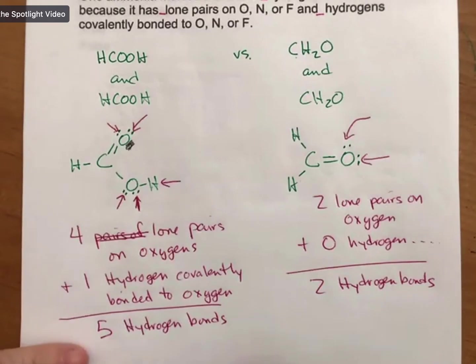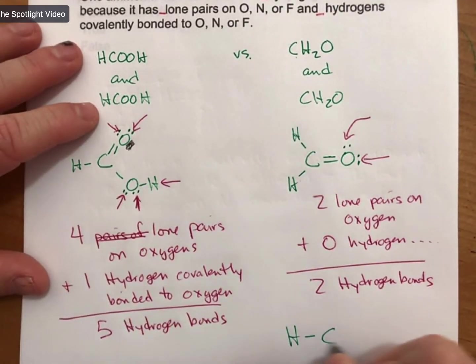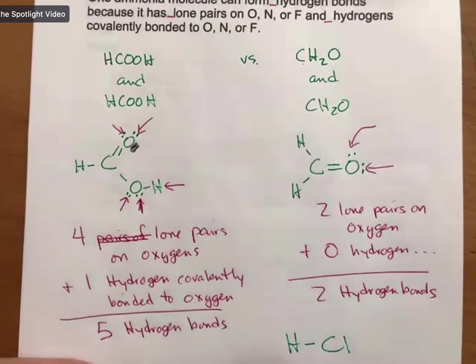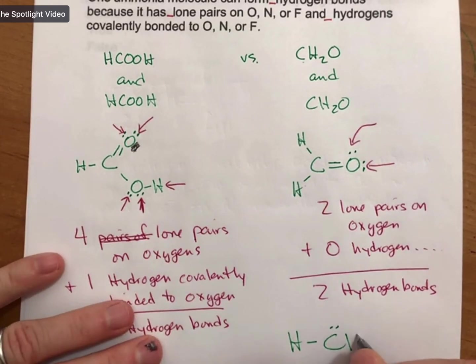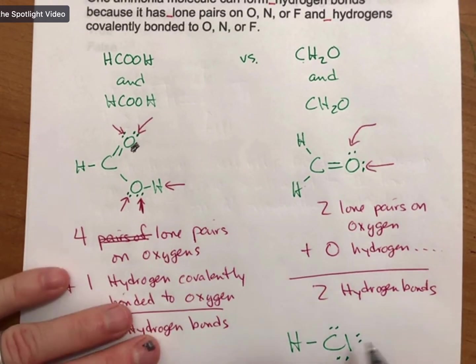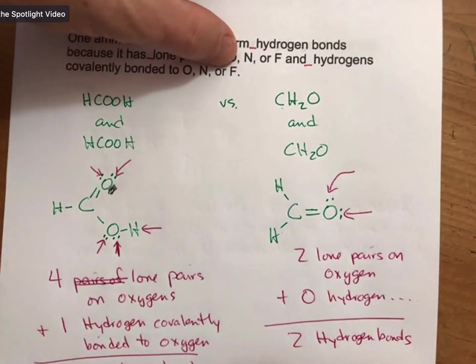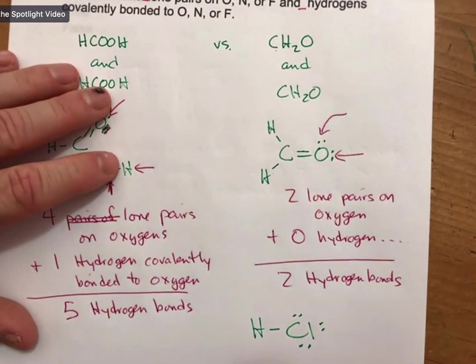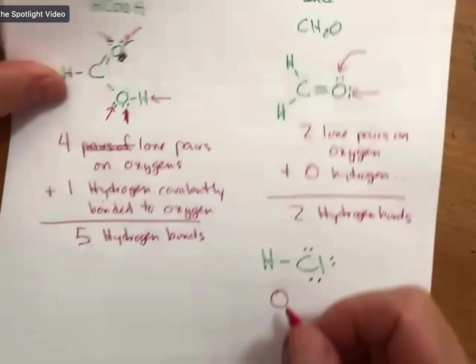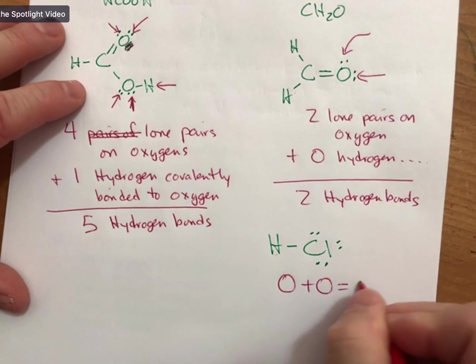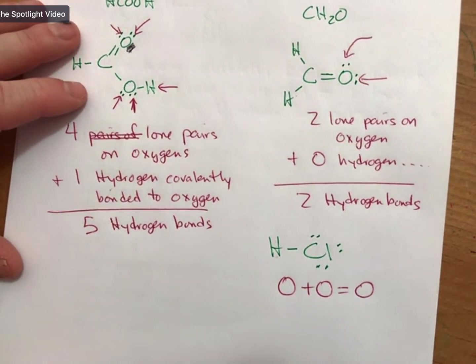And as a third example, let me actually do HCl. HCl has, and I guess I should draw its Lewis structure here, HCl has zero lone pairs on oxygen, nitrogen, or fluorine. And zero hydrogens covalently bonded to oxygen, nitrogen, or fluorine. So the calculation would go zero plus zero equals zero for HCl.